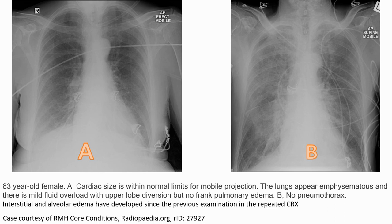The lungs appear enlarged and there is mild fluid overload with upper lobe diversion, but no frank pulmonary edema. Image B shows no pleural effusion but presents with interstitial and alveolar edema. New developments have occurred since the previous examination.